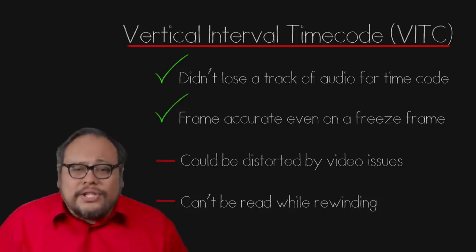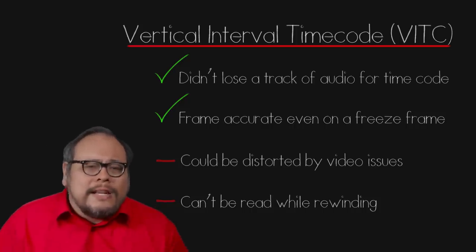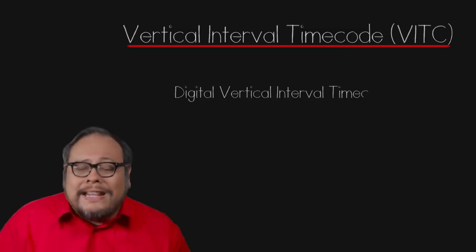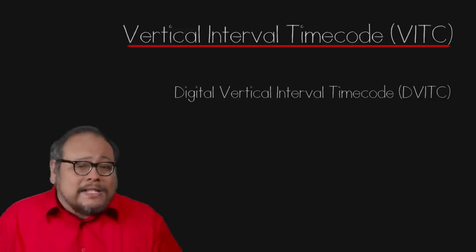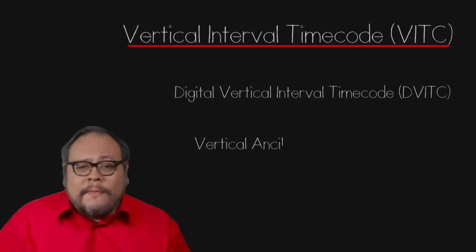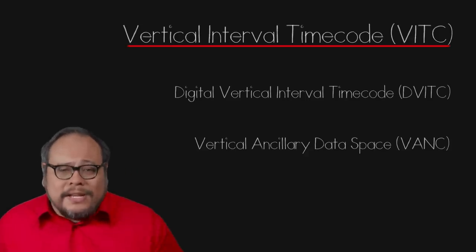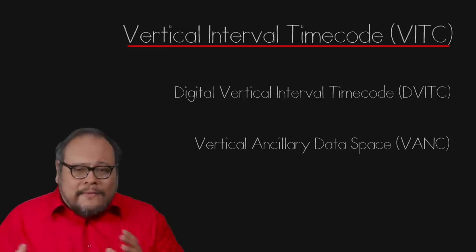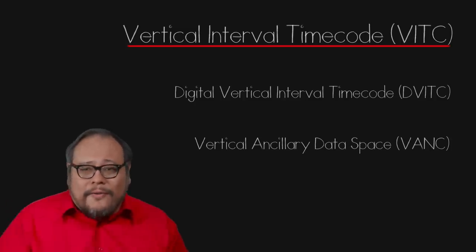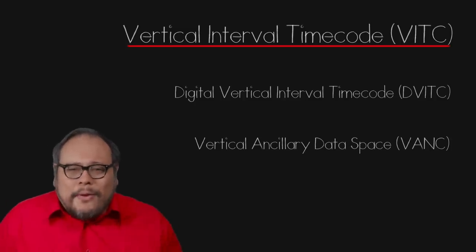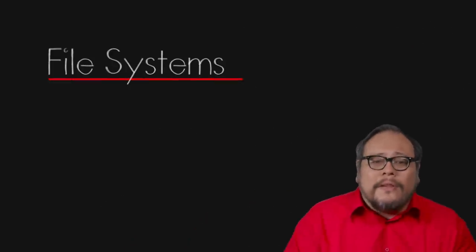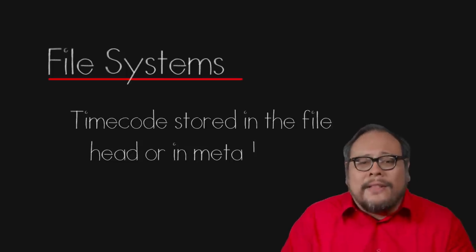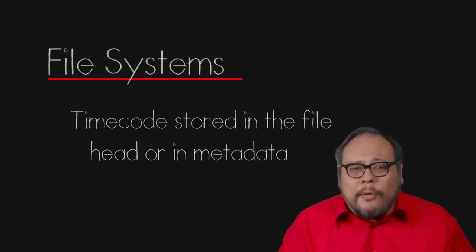When video started going digital, the VITC analog signal was developed into the digital vertical interval timecode. And because component digital video didn't have vertical blanking intervals, engineers developed and began hiding timecode signals into the vertical ancillary data space, formatted to look like video samples. We won't go further into those systems because they weren't widely used and were quickly replaced by the file systems we have today, where the timecode is embedded in the file either at the header or in some form of metadata.